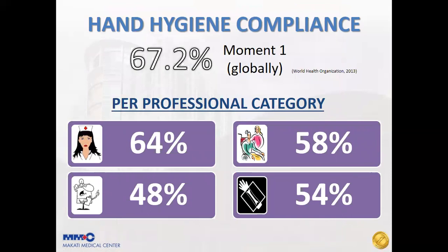According to a WHO survey in 2013, global hand hygiene compliance for moment one (before touching patient) was 67.2%. By professional category, nurses had the highest compliance at 64%, followed by aides and orderlies at 58%, then auxiliaries such as med techs, rad techs, physical therapists, and other ancillary services at 54%. The least compliant group was doctors, with only 48% compliance.